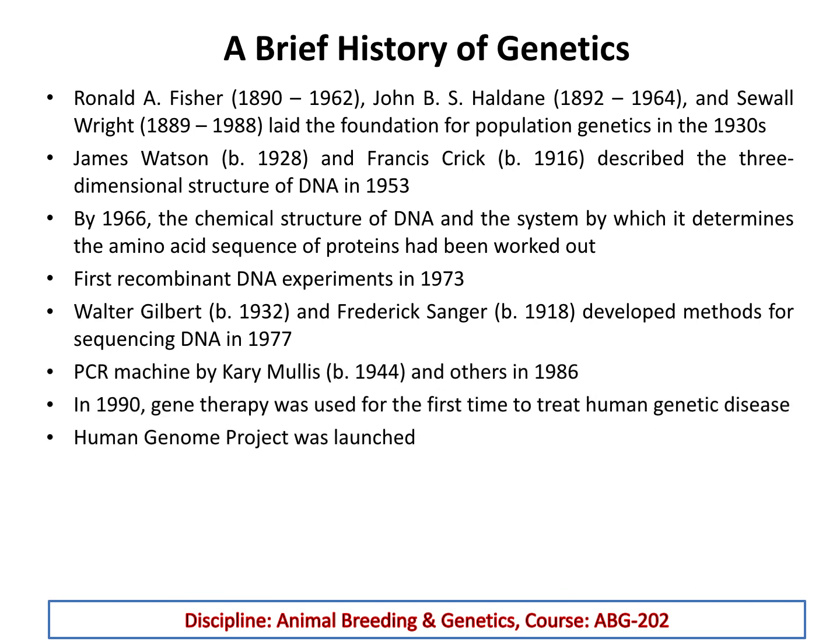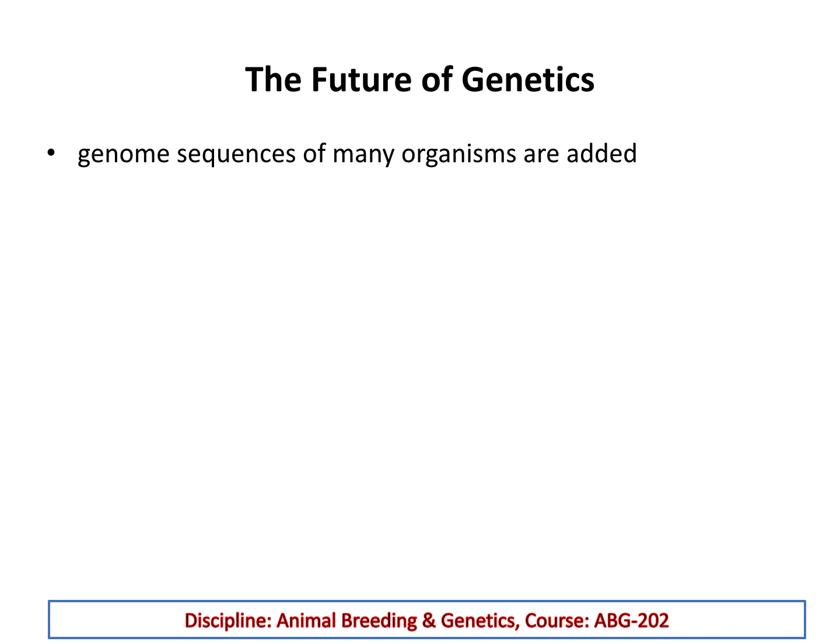Looking briefly at the future of genetics: over many years the field progressed from simple phenotypic selection, to trait-based selection, to scientific evolution, to the structure of DNA — where Watson and Crick proposed the double helix model — then to the study of mutations by T.H. Morgan, and many other advances.